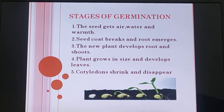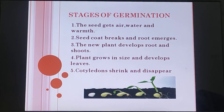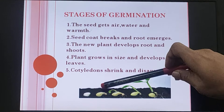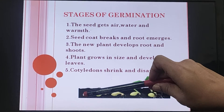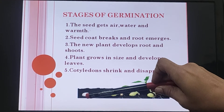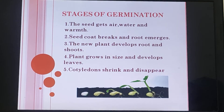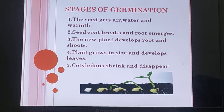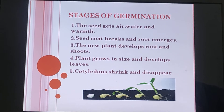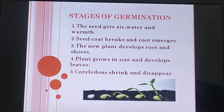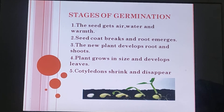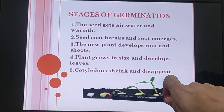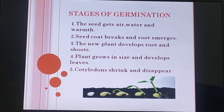When we put the seed into the soil, the seed starts absorbing water and receives air and warmth. As it absorbs water, it swells up, and due to that the seed coat bursts. You can then see a small white colored structure coming out, which we call the radicle.